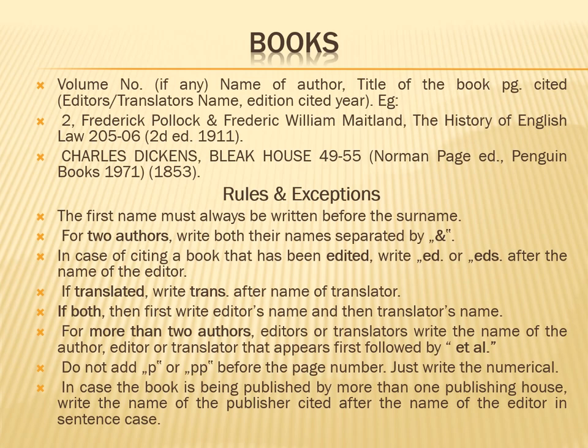There are different formats for each source. For books, if there is a volume number, you have to place first the number of the volume, then the name of the author, then the title of the book, then page number, then the name of the editor or translator, then edition and year. You have to write the first name and then the surname. If there are two authors, you must separate them using 'and'. In case of citing an edited book, always write 'ed.' or 'eds.'